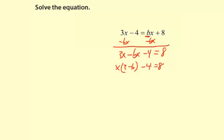Next, I'm going to add 4 to both sides. So you're going to get x times 3 minus b equals 8 plus 4, which is 12.